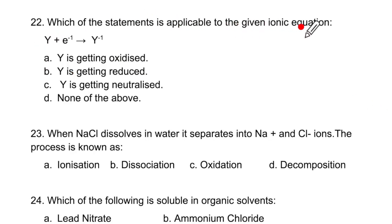Which of the statements is applicable to the given ionic equation. Y plus an electron gives Y 1 minus. When it is gain of electron, it is getting reduced. When NaCl dissolves in water it separates into Na 1 plus and Cl 1 minus and the process is dissociation. There were ions in this compound which got separated.